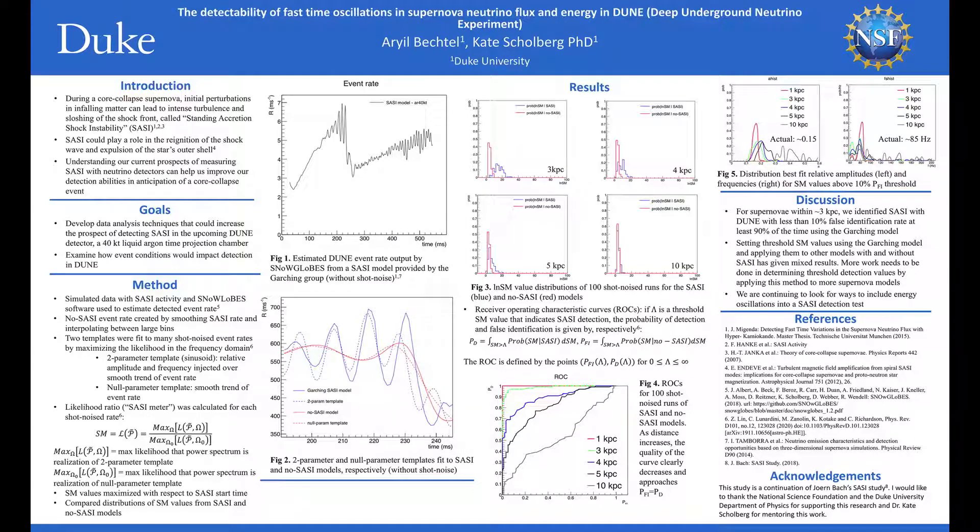Hi, my name is Ari Bechtel, and I'm a junior physics major at Duke University. In a continuation of Jernbach's 2018 SASI study, my project focuses on the detectability of standing accretion shock instability, or SASI, in the upcoming Deep Underground Neutrino Experiment detector, or DUNE.